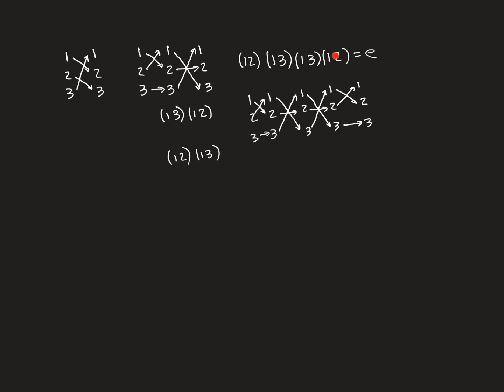As you work outward, (1,3) cancels with (1,3), (1,2) cancels with (1,2), and whatever further transpositions you have cancel pairwise, leaving just the identity. So decomposition into transpositions gives this beautiful, easy-to-understand version of the inverse.